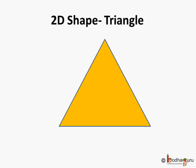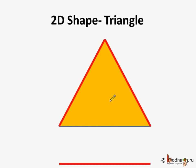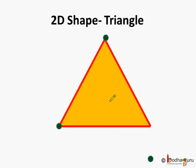Now this is a triangle. How many sides does a triangle have? A triangle has one, two, three sides and how many corners? One, two and three. Three corners are there. So a triangle has three sides and three corners.